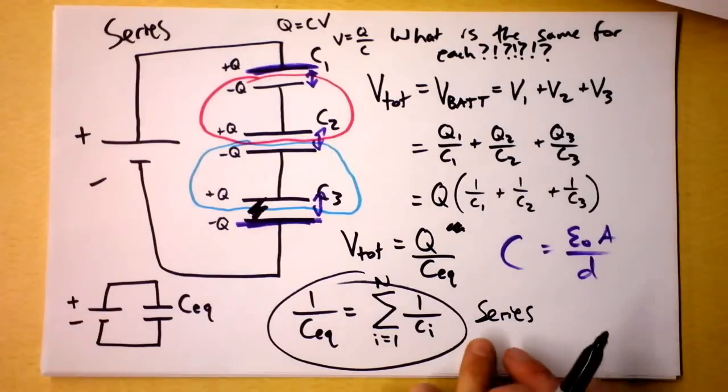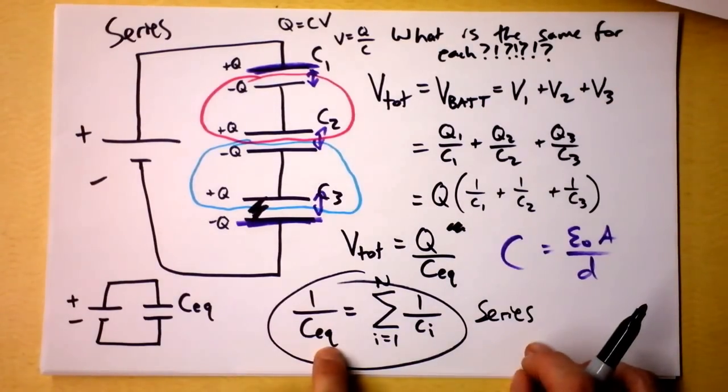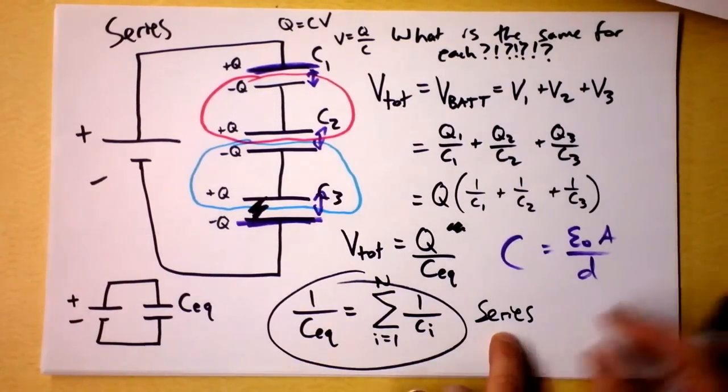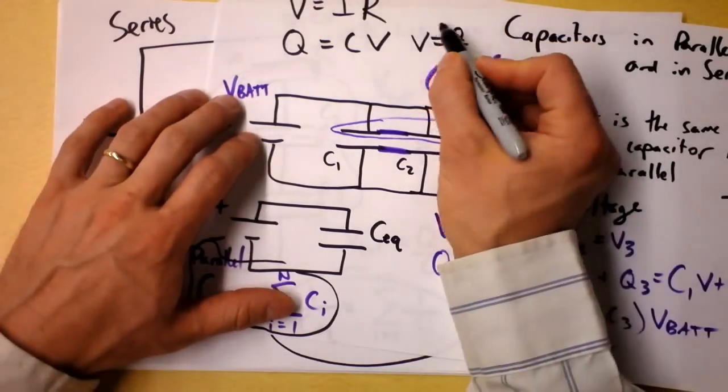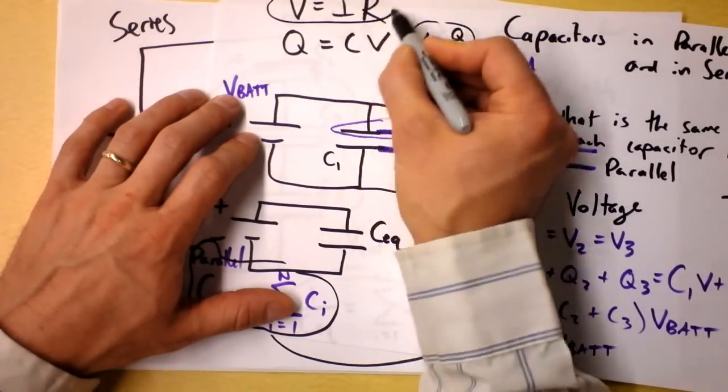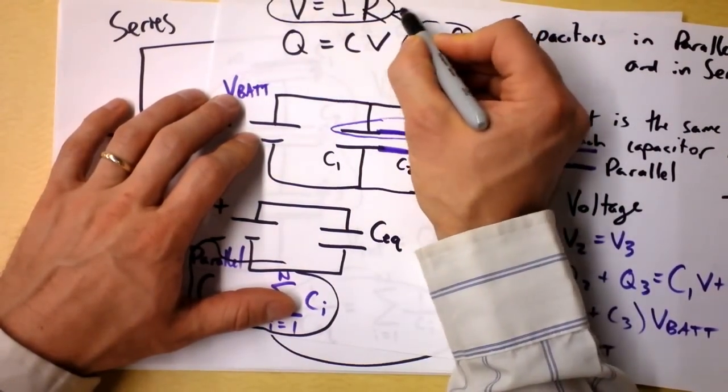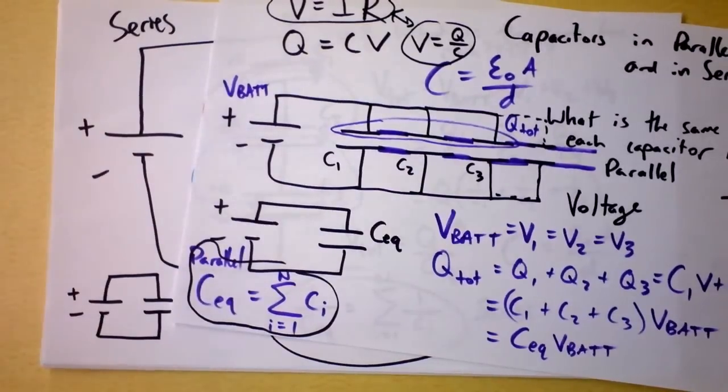You've got this parallel configuration for equivalent capacitance and you've got this series configuration for equivalent capacitances. And notice that the series for capacitors looks like the parallel for resistors and the parallel for capacitors looks like the series for resistors because the relationship on voltage is inversely proportional depending on whether you're talking about capacitors or resistors.